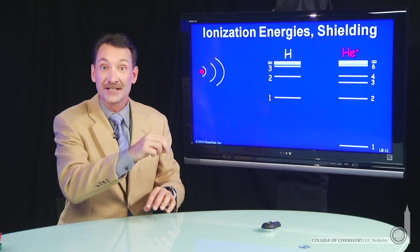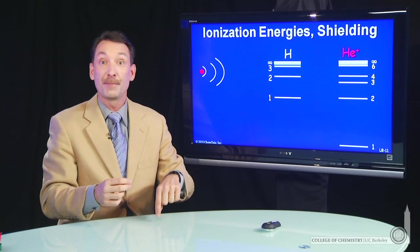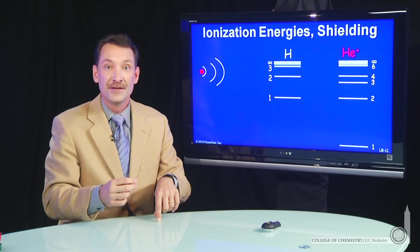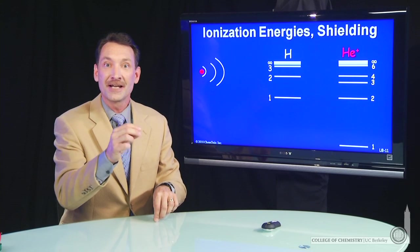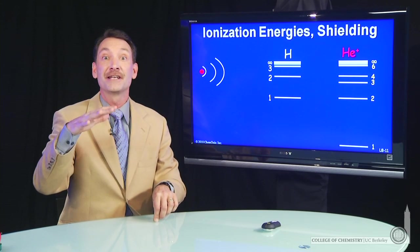Well, what holds the electron about the atom? It's the positive charge on the nucleus. So the more positive charge that an electron can see, the more difficult it is to ionize.